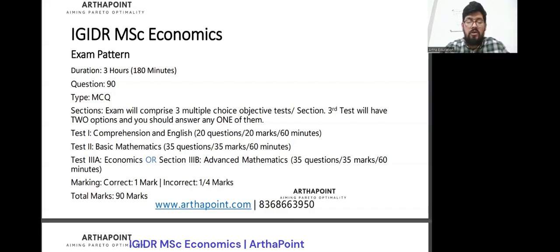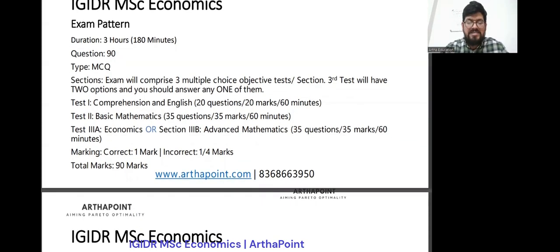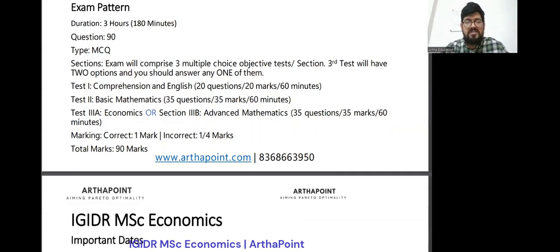Now let's go to the marking scheme. It's pretty much the same, one mark when you get it correct and one by four would be deducted when it's wrong. So 0.25 is gone. Total marks going by the marking scheme and the number of questions is your 90 marks. That is pretty odd, but this is what it is. If they are going for one marker and they have 90 questions, it's supposed to be 90 marks.